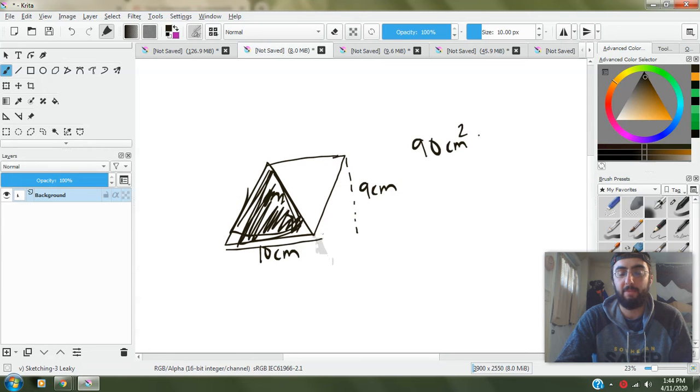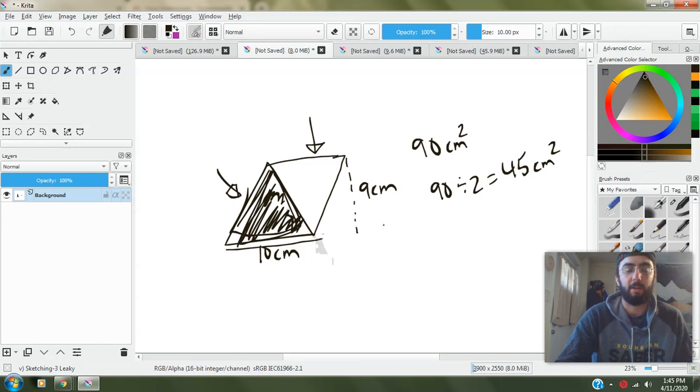So how do you find half? Well, you either multiply by one half or you divide by two. So if we take this 90 and divide by two, so that's basically saying half of this 90 is 45. So this triangle right here and this triangle right here would both have an area of 45 centimeters squared.